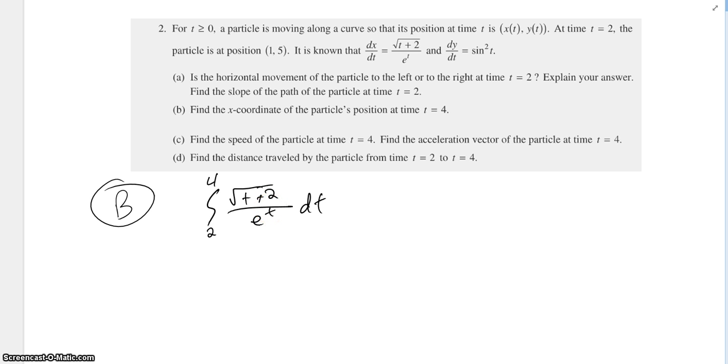Alright, so we could solve this out, but the easiest way to do it is just plugging it into your calculator. So you can plug this part in to your y equals and then do fnint and find the value for this. And this is about 0.253, but you have to remember to add 1 because at time equals 2, the particle is already at position 1. So you add 1 to that and you get 1.253. That's your answer. And that's the position of the x-coordinate when time equals 4.